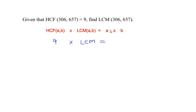Now a and b are the two numbers, so I'm going to take a as 306 and b as 657. So here it is 306 times 657.